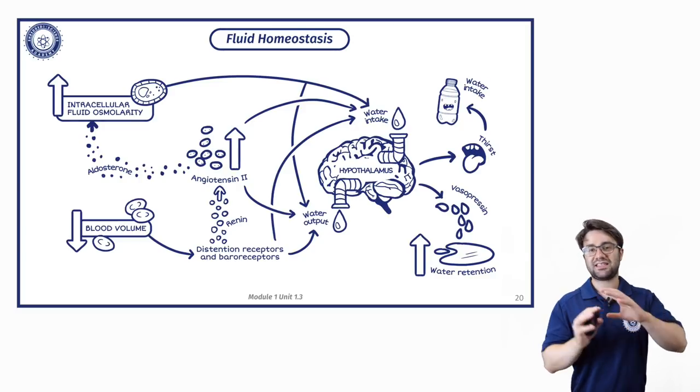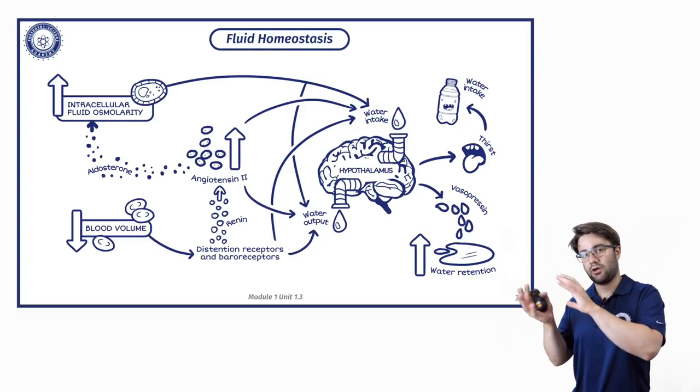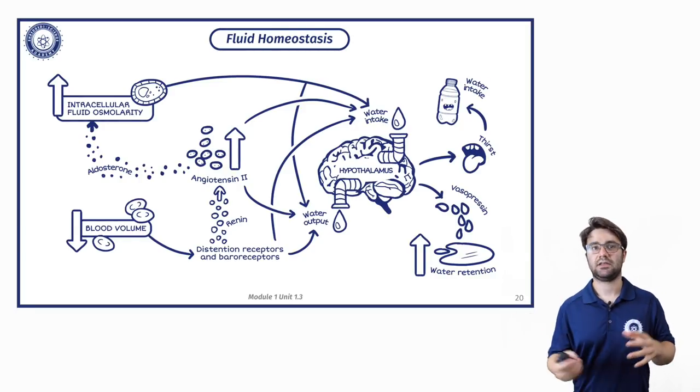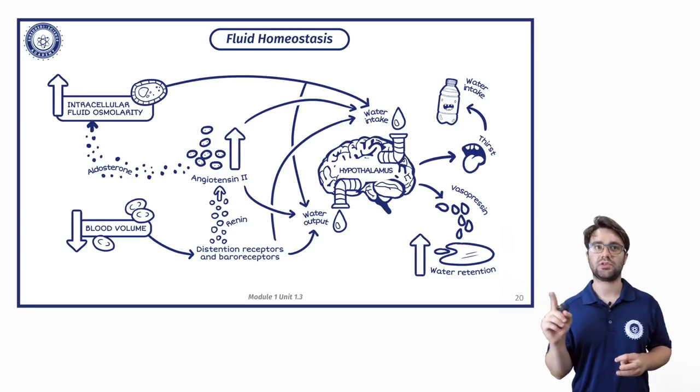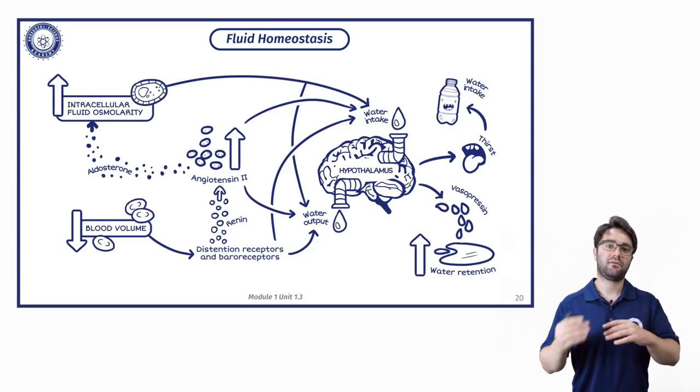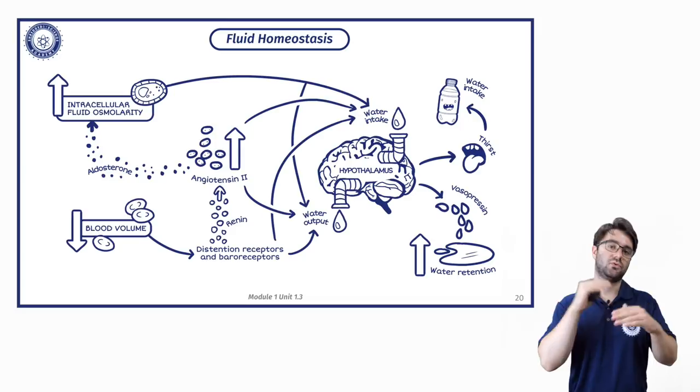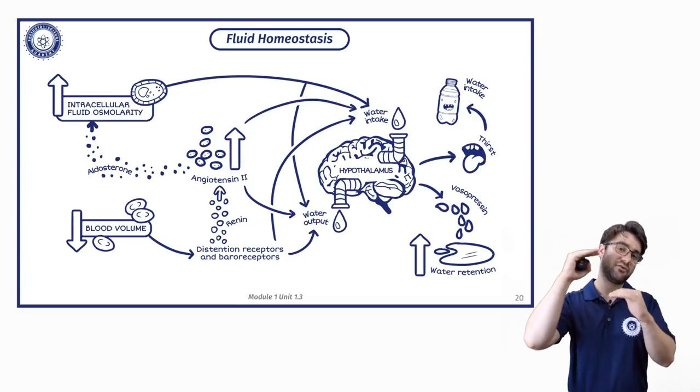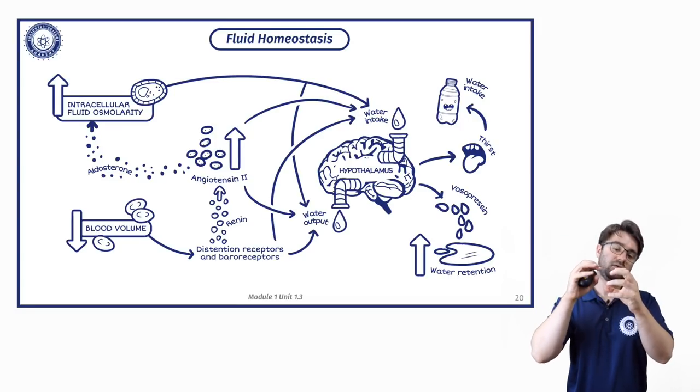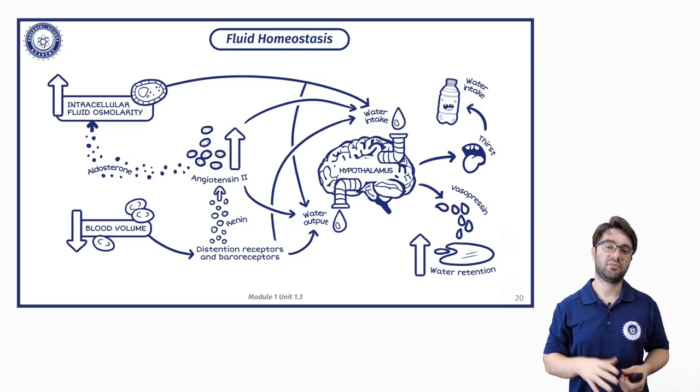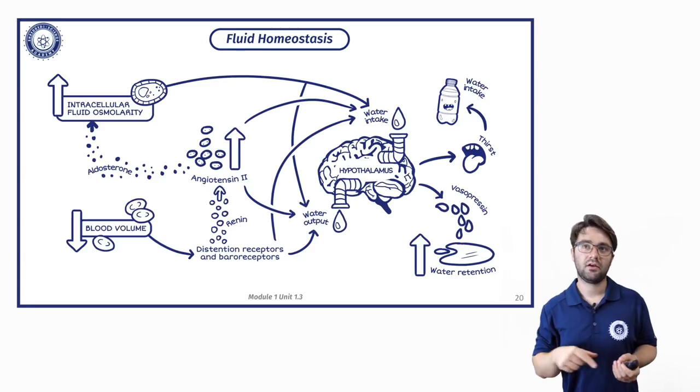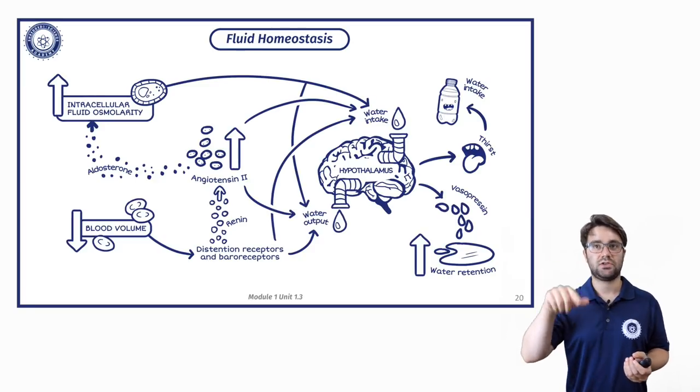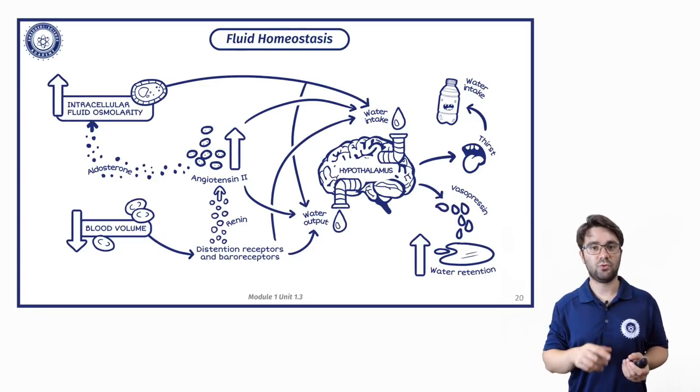So this is the fluid homeostasis cascade. Basically, the things to note are if intracellular fluid osmolarity goes up, so if the osmolarity of the fluid inside our cells goes up, if we have more solutes inside our cells, this signals to the brain via various things to drink more water.